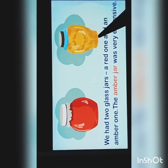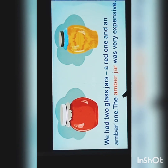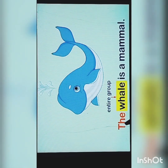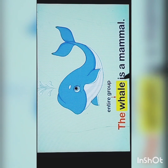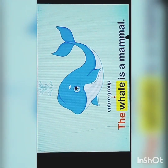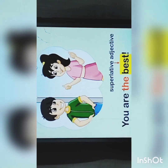We use the when it is clear which person, place, animal or thing is being referred to. For example: we had two glass jars, a red one and an amber one, and the amber jar was very expensive — here we use the with the amber jar. We also use the when naming a noun that refers to an entire group of its kind — for example, the whale is a mammal. We use the before ordinal numbers and before superlative adjectives — for example, you are the best.